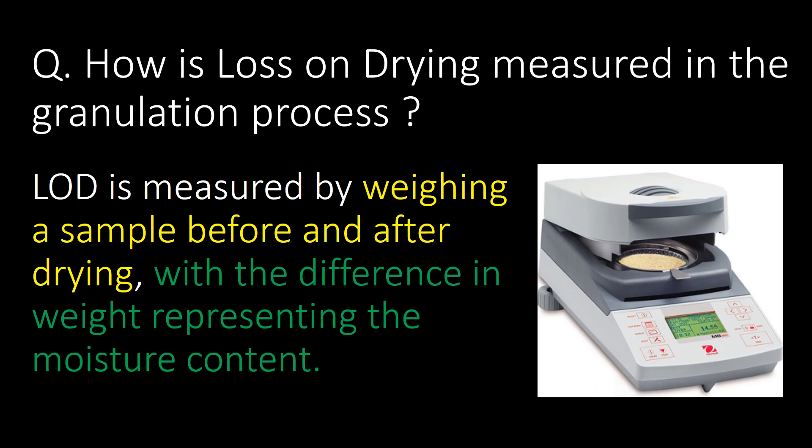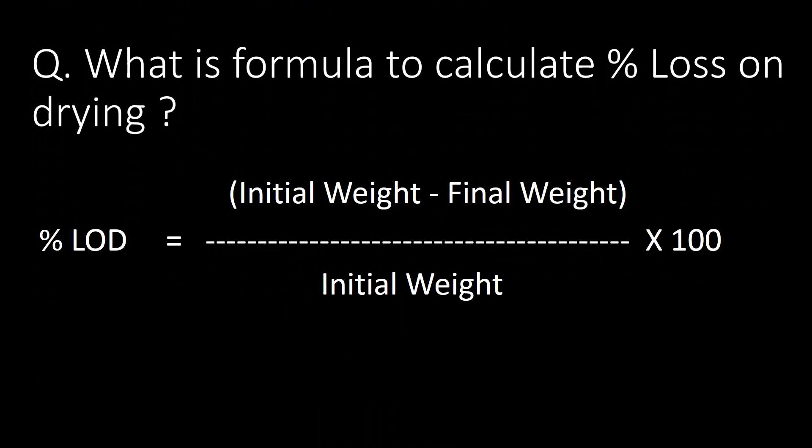How is loss on drying (LOD) measured in the granulation process? LOD is measured by weighing a sample before and after drying, with the difference in weight representing the moisture content. The formula for percent LOD is: (initial weight minus final weight) divided by initial weight, multiplied by 100.